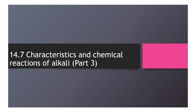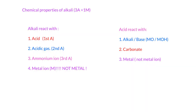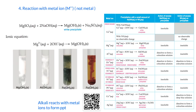This is Part 3 of the chemical reactions of alkalis. In previous videos we talked about alkalis reacting with acids, acid gases, and ammonium ions. Today we're going to talk about the metal ion. Remember, it is metal ion, not metal. So how does the reaction look like?